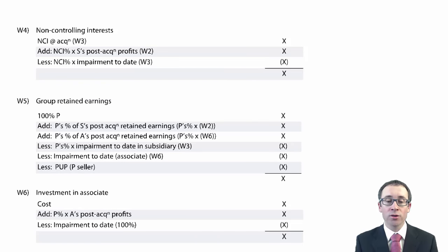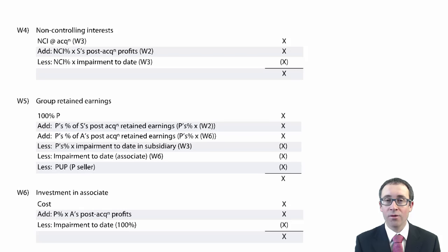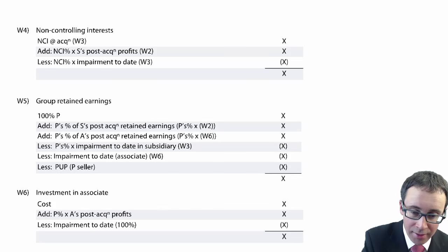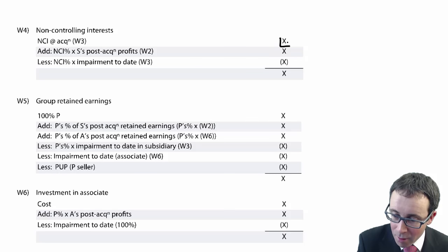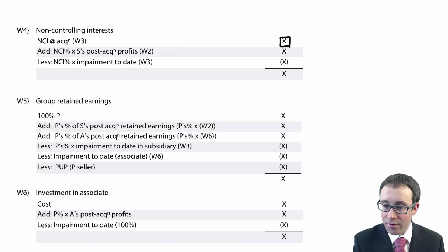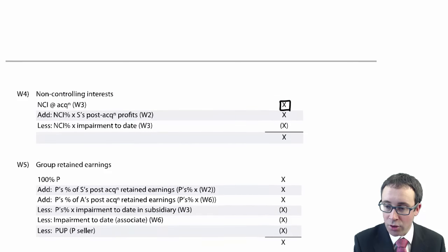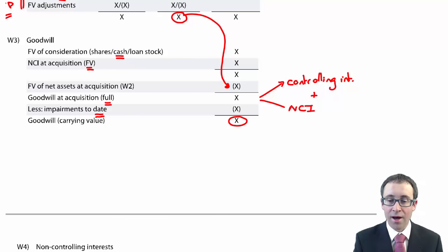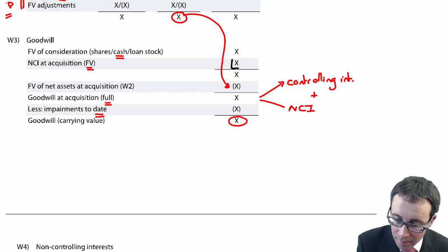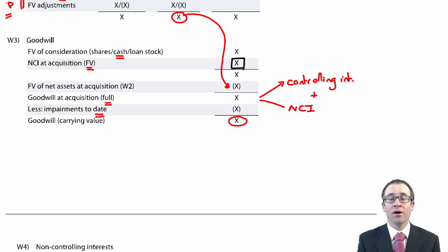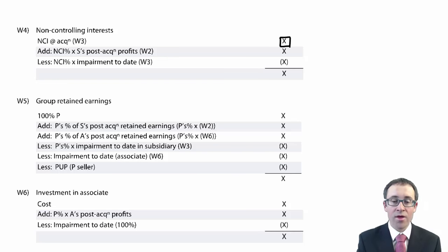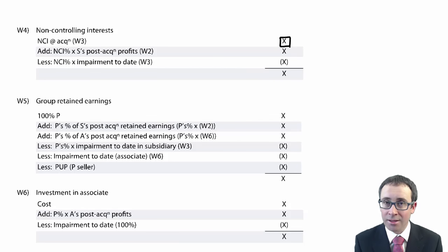Working number four is your non-controlling interest. Take the NCI at acquisition — that is the same figure as the NCI in your goodwill calculation, so those two figures are exactly the same. You then add on the NCI's share of S's post-acquisition profits to date. That figure comes from working two.